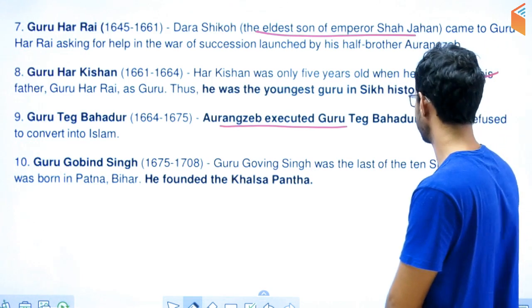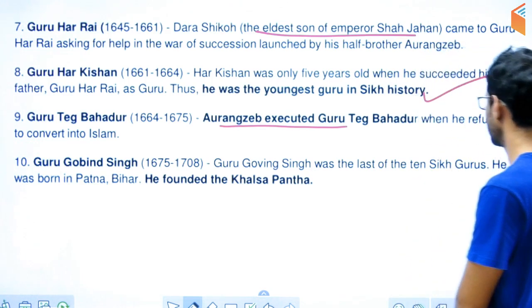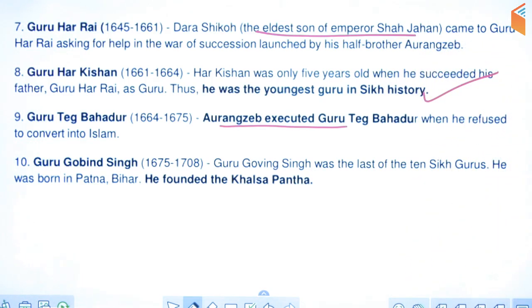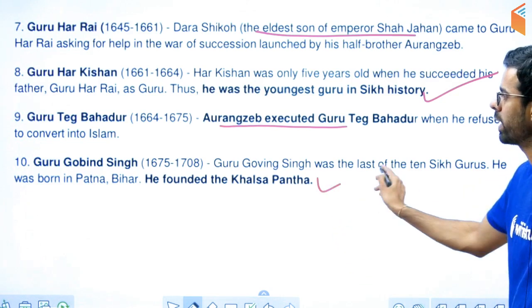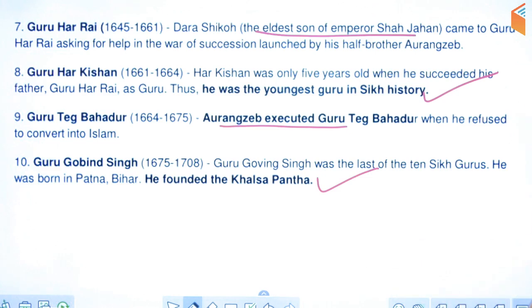Guru Gobind Singh ji was the tenth and last human Sikh Guru. After him, the Guru Granth Sahib was made the permanent Guru. He also founded the Khalsa, which was started by Guru Gobind Singh ji.